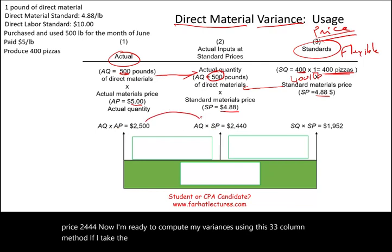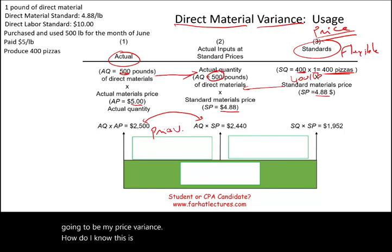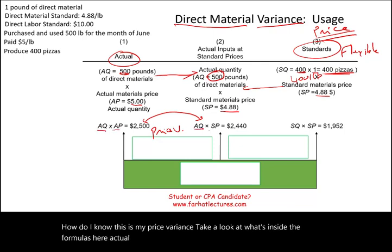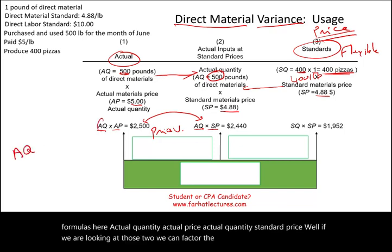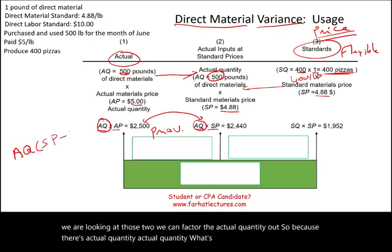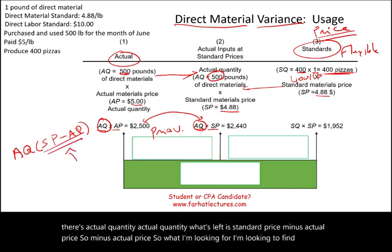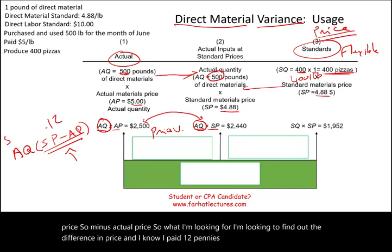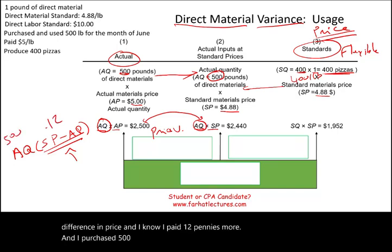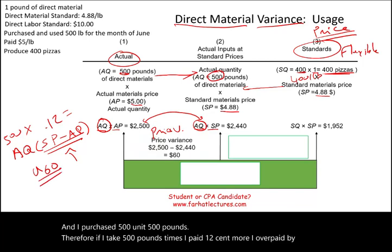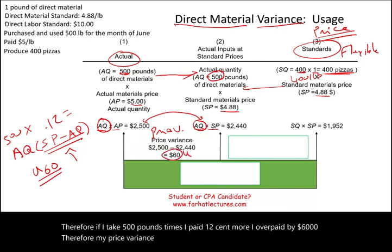The difference between column one and column two gives the price variance. If we factor out actual quantity, what's left is actual price minus standard price. We paid $0.12 more per pound, and we purchased 500 pounds, so we overpaid by $60. Therefore, the price variance is $60 unfavorable.